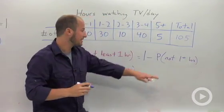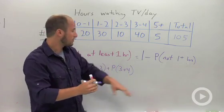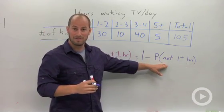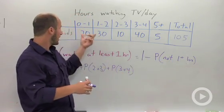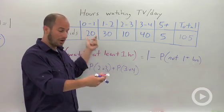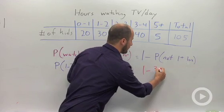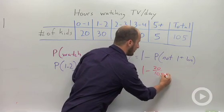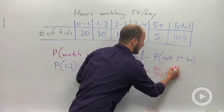One plus is the complement, not watching more than an hour, and this one is really easy to follow because not one plus hours is just saying we're watching zero to one. Twenty students watch zero to one hours, so all we have to do is just calculate one minus 20 over 105, which is going to give us 85 over 105.